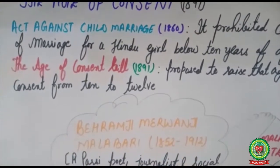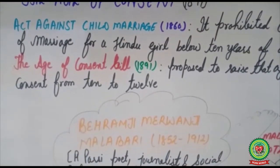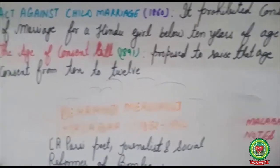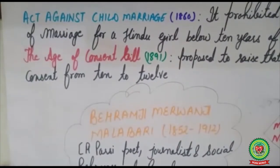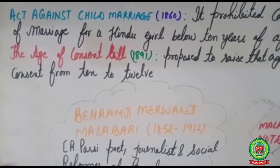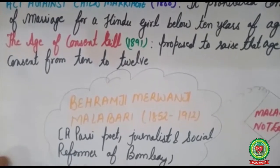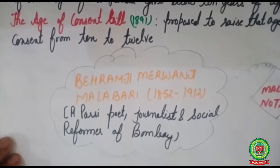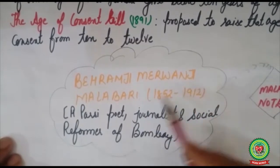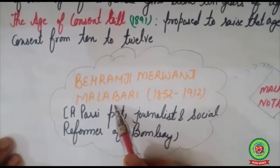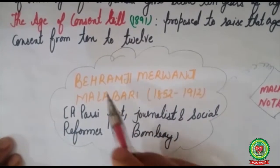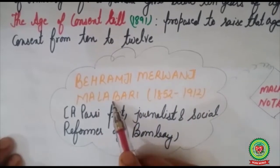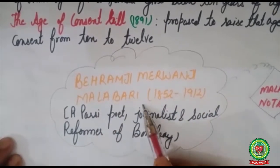According to the Age of Consent Bill 1891, it proposed to raise the age of consent from 10 to 12. In passing this bill, Behramji Malabari of Malabar had played a vital role.